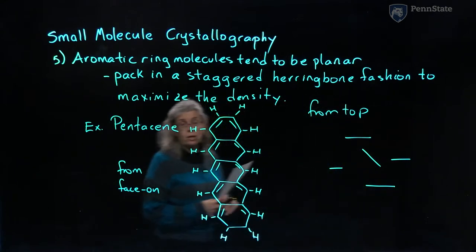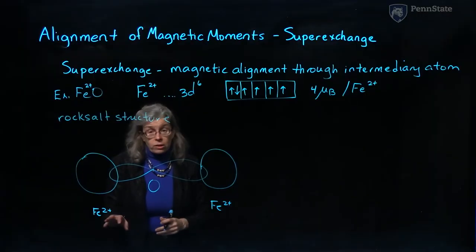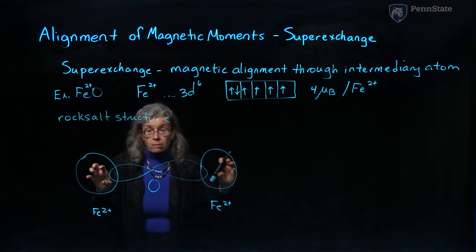And they're going to do this so that we can maximize the density of the material. So let's just imagine how one iron atom might influence the alignment of the spins on the next iron atom.